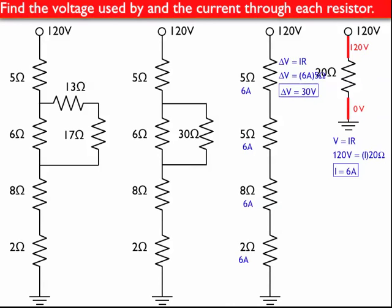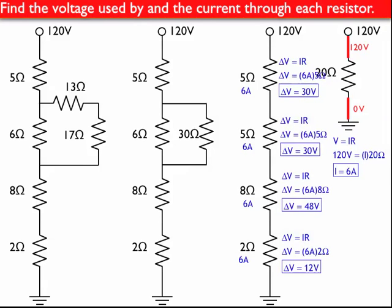So, 120 at the top, minus 30, it's now at 90. And then I continue this process using Ohm's Law for the remaining resistors. And I do all these calculations using Ohm's Law.